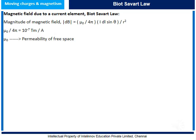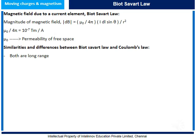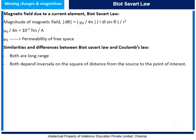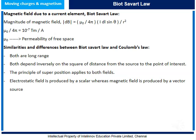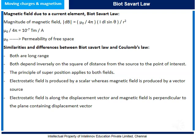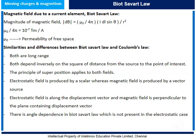Let us understand the similarities and differences between Biot-Savart law and Coulomb's law. Both laws are related to long range and both depend inversely on the square of distance from the source to the point of interest. The principle of superposition applies to both fields. The differences are: the electrostatic field is produced by a scalar source whereas the magnetic field is produced by a vector source; the electrostatic field is along the displacement vector while the magnetic field is perpendicular to the plane containing the displacement vector; and there is angle dependence in Biot-Savart law which is not present in the electrostatic case.